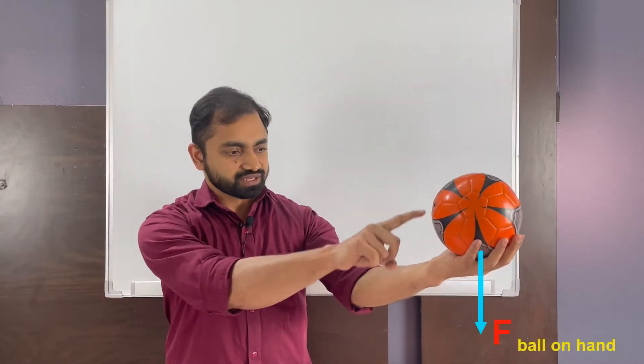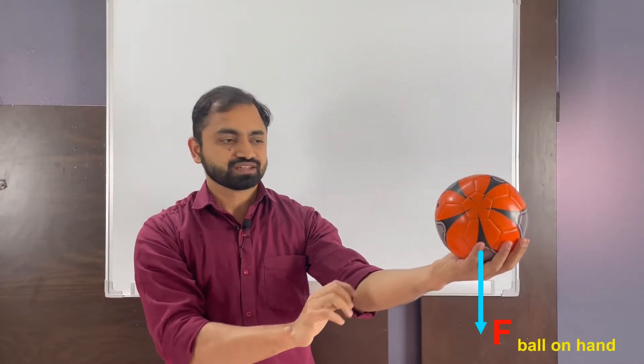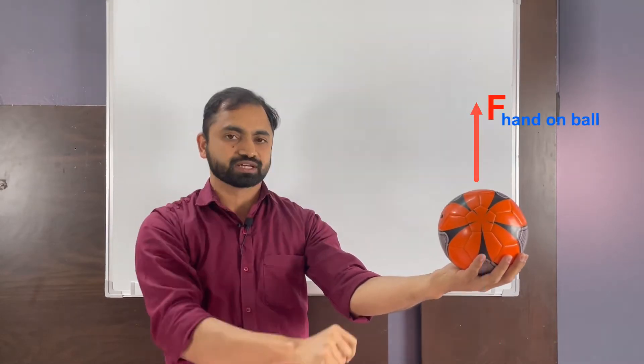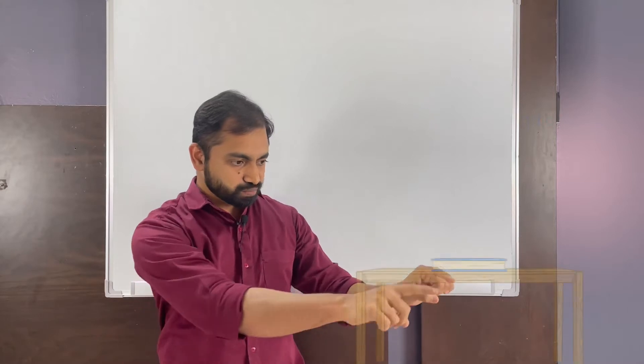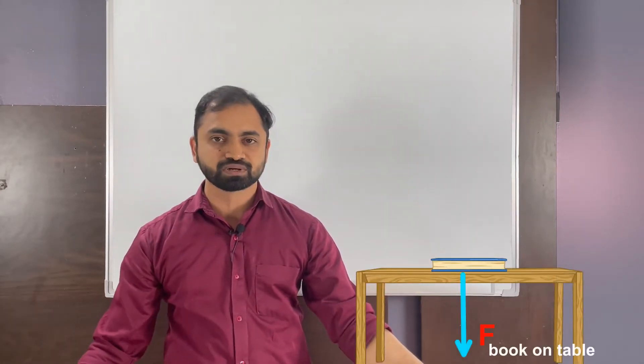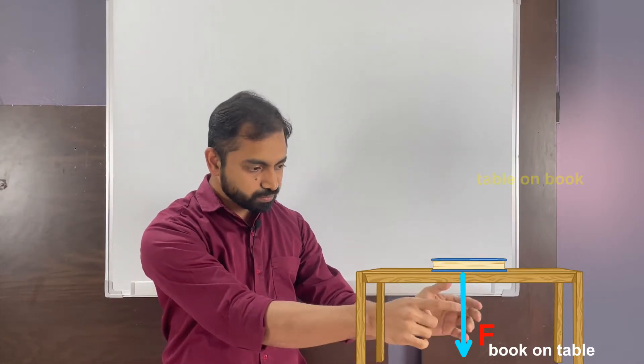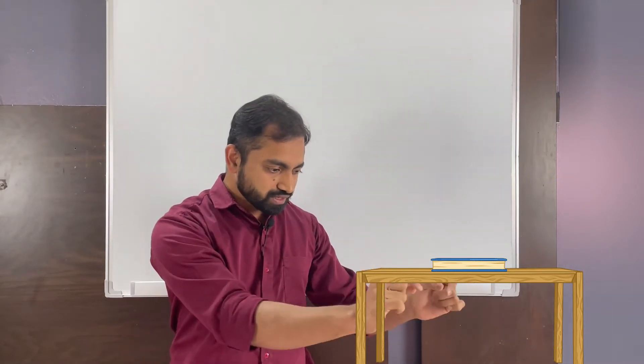This ball applies a downward force on my hand, then my hand applies an equal force on the ball in the upward direction. This book on the table applies a downward force on the table, then this table applies an equal force on the book in the upward direction. And if I push this table, then the table will push me in the backward direction with the same force. This is called Newton's third law.